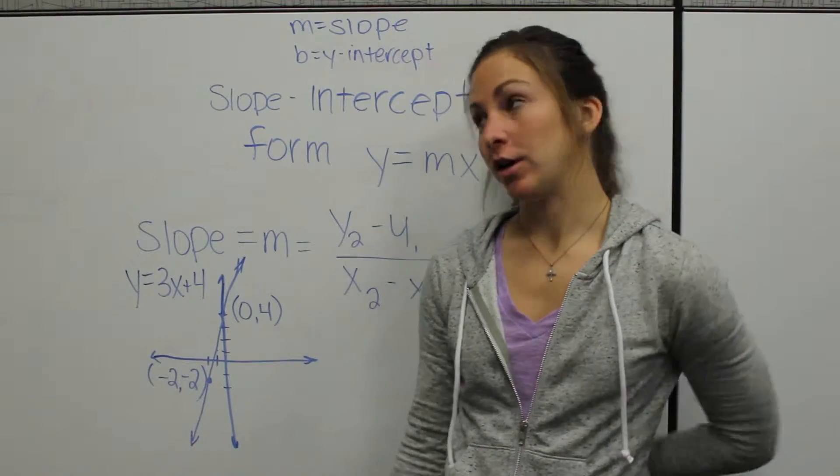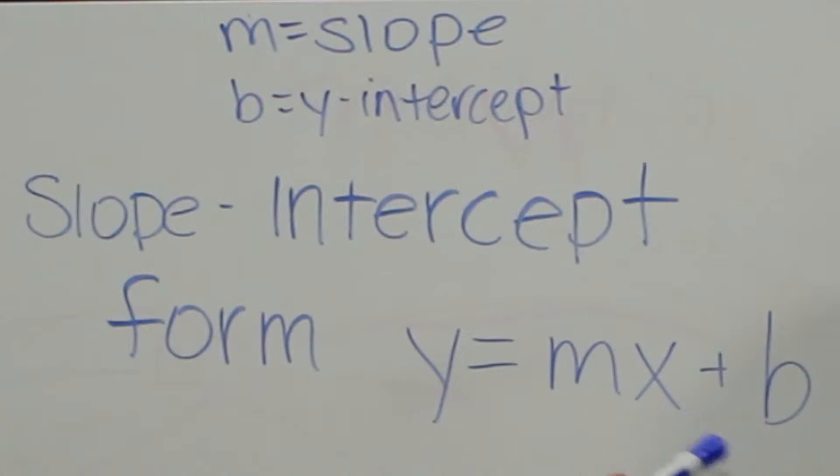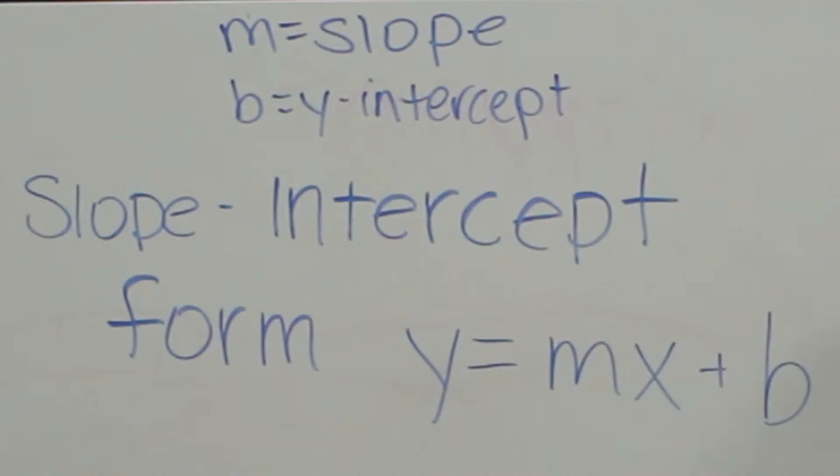In order to calculate the slope of a line, we're going to use the equation in slope-intercept form, which is y equals mx plus b. In this case, m is our slope and b is our y-intercept.